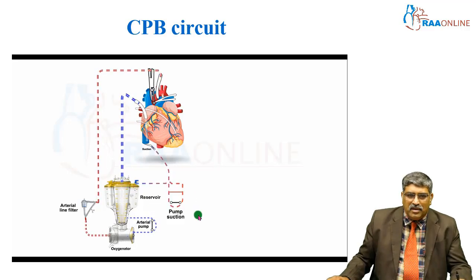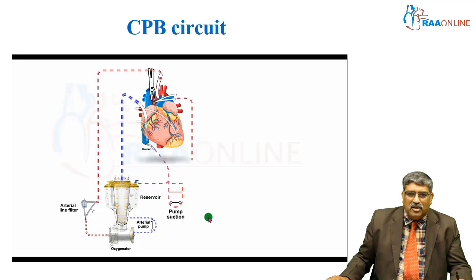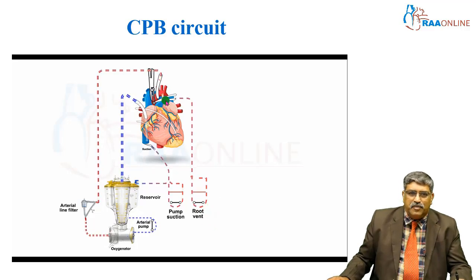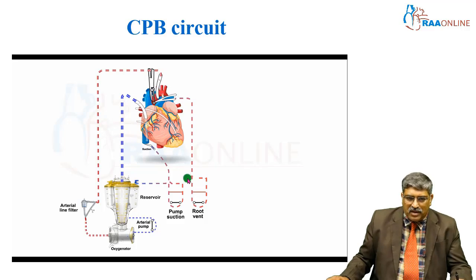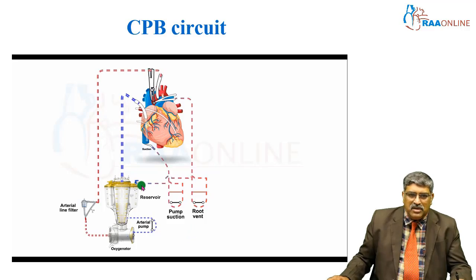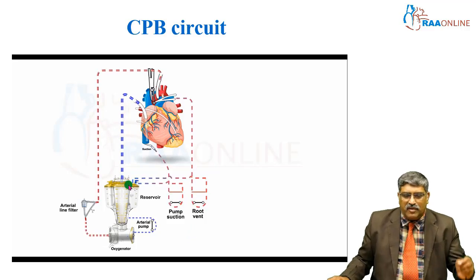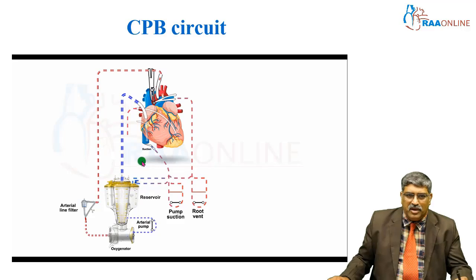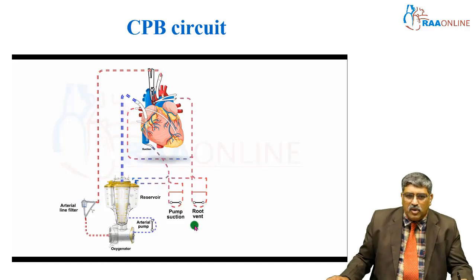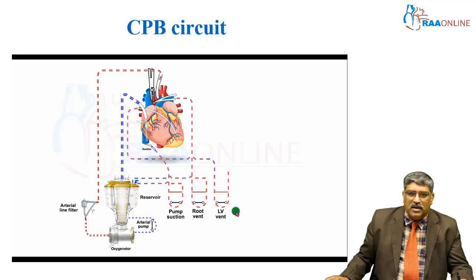Second, you have a vent. First is the root vent, which is placed in the aortic root. This aortic root vent collects blood and sends it back into the venous reservoir. That is the second source of collection of blood in the venous reservoir. The third one is the LV vent.